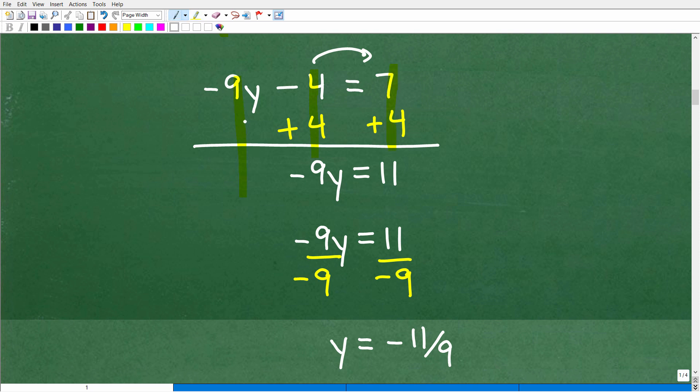As long as I do it equally to both sides of the equation, that's effectively moving that number to the right hand side. And then we're going to go ahead and just add down in a column manner. Negative nine Y plus nothing is negative nine Y minus four plus four is zero. We don't need to write that. And seven plus four is, of course, 11. All right. So we have negative nine Y is equal to 11. We're almost there. So to solve for Y, I need to do what? Well, you just have to divide both sides of the equation by negative nine.